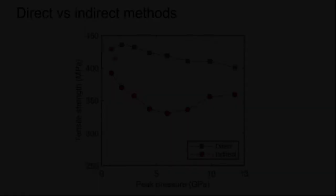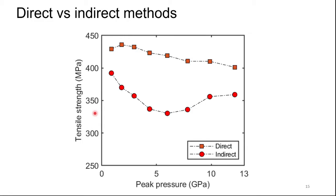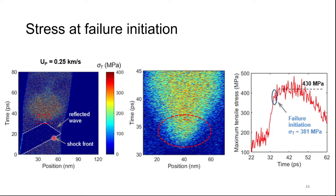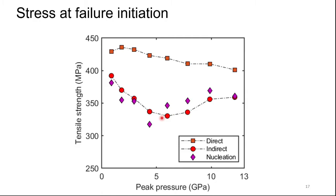Here we compare the tensile strength obtained from the direct versus indirect method, which varies with shock pressure. MD simulations allow us to compute the stress of the sample at failure initiation. By looking at the variation of the maximum tensile stress of the sample with time, we can see that failure initiates at a certain point, and we found that the failure initiation or nucleation stress is somewhat similar to the stress given by the indirect method.